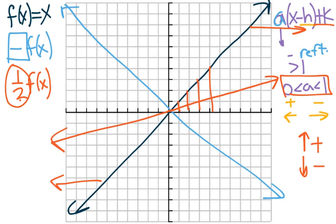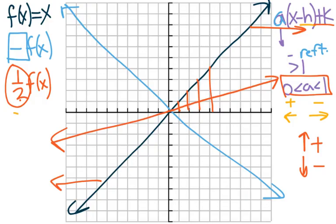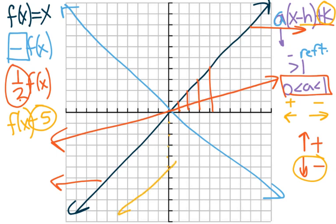I'm not looking for super accuracy on your graphs — if I wanted that, I'd have you graph it on a graphing calculator or Desmos. We're just doing it to get a feel for these main transformations. The last one, f(x) minus 5: the 5 is outside the parentheses, so that would be k. It's negative, so that would be down. So we just move down 1, 2, 3, 4, 5 and draw that same line.